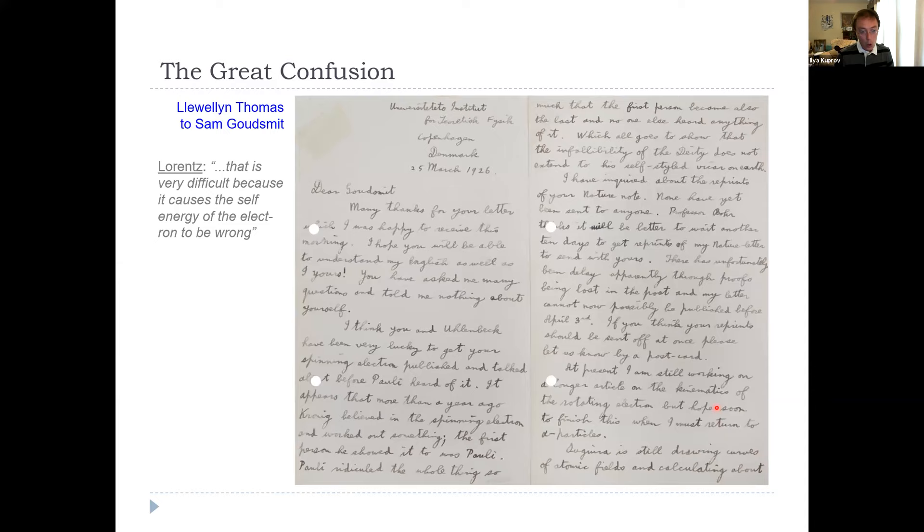Of course, everybody was rather suspicious about a property that on the one hand you essentially need, but on the other doesn't seem to have any good explanation for it. Uhlenbeck in his memoirs is quite fond of this particular letter from Llewellyn Thomas, a British specialist in relativity, to Goudsmit. 1926, same year the paper was published. I'll read it: 'I think you and Uhlenbeck have been very lucky to get your spinning electron published and talked about before Pauli heard of it. It appears that more than a year ago, Kronig, an American physicist, believed in the spinning electron and worked out something. The first person he showed it to was Pauli. Pauli ridiculed the whole thing so much that the first person also became the last, and no one else heard anything of it. Which all goes to show that the infallibility of the deity does not extend to his self-styled vicar on earth,' meaning Pauli of course.